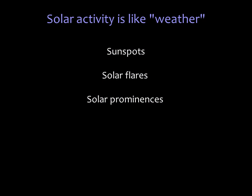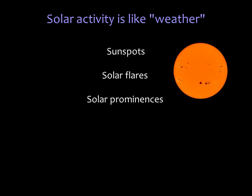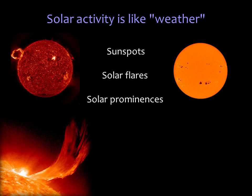Solar activity is like weather because it changes with time. Solar activity features include sunspots, huge explosions known as solar flares, and gigantic loops of hot gas called prominences.